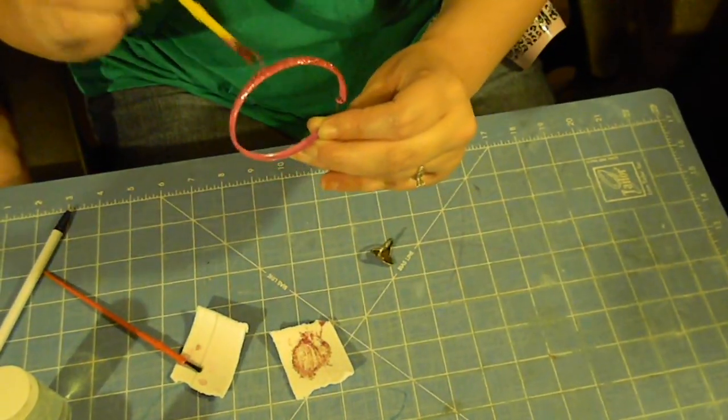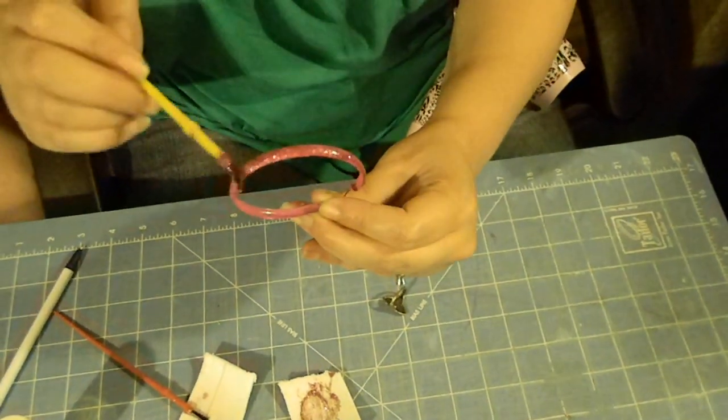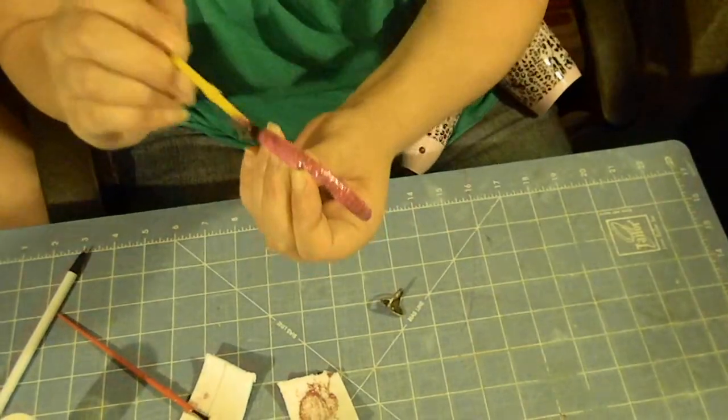a long time ago people just used to throw some fingernail polish on top of them, but what you can do is just take any kind of acrylic paint that you like and repaint the pieces.